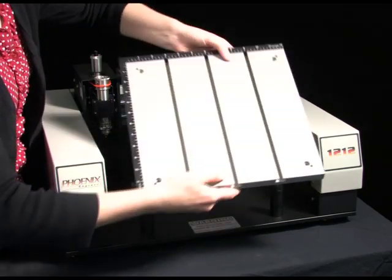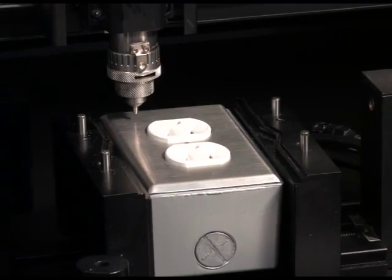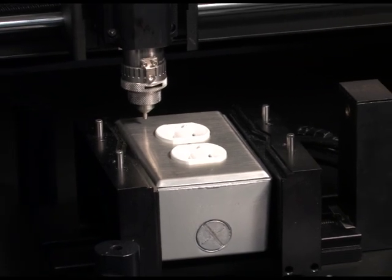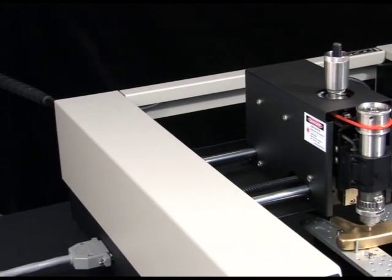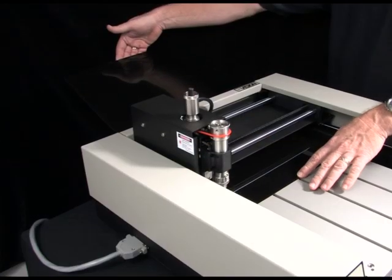With a removable 12 inch by 12 inch T-slot table, the Phoenix can engrave items up to three inches thick using our self-centering vise as well as allow for a 12 inch by any length piece of material with the open front and back.